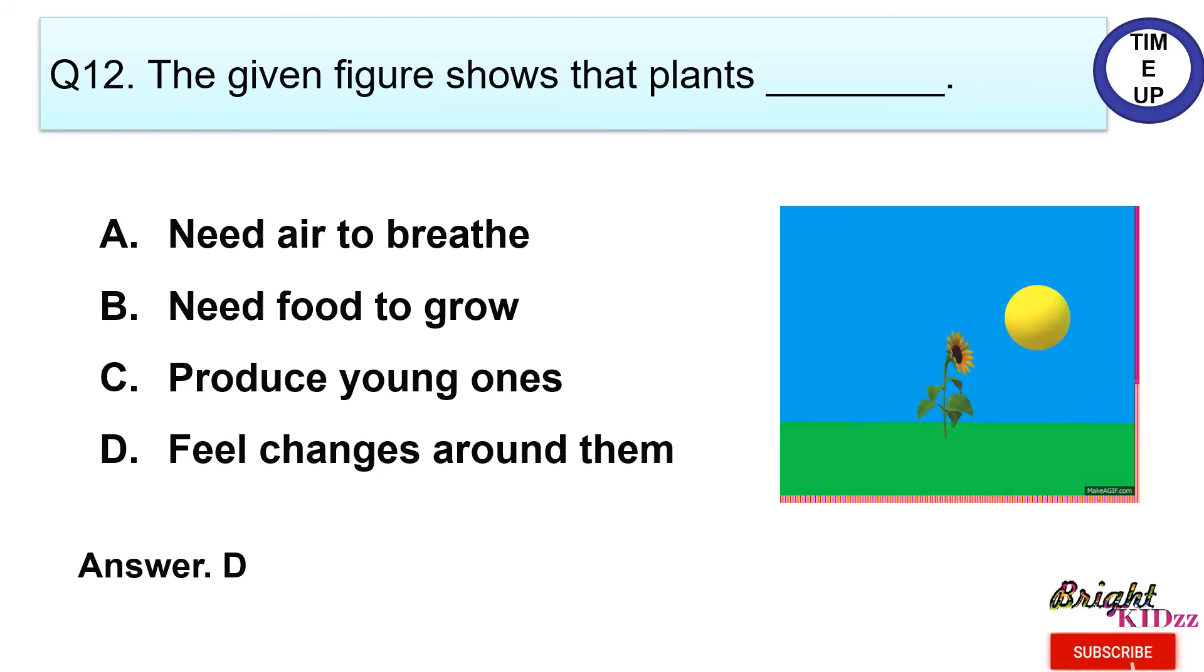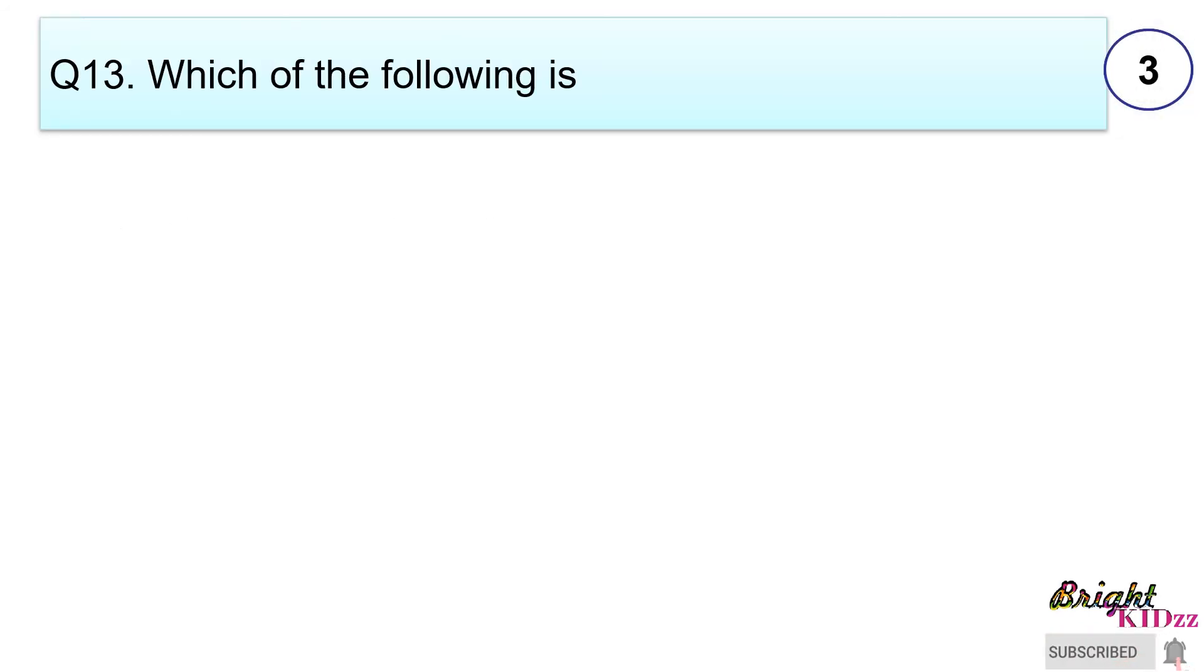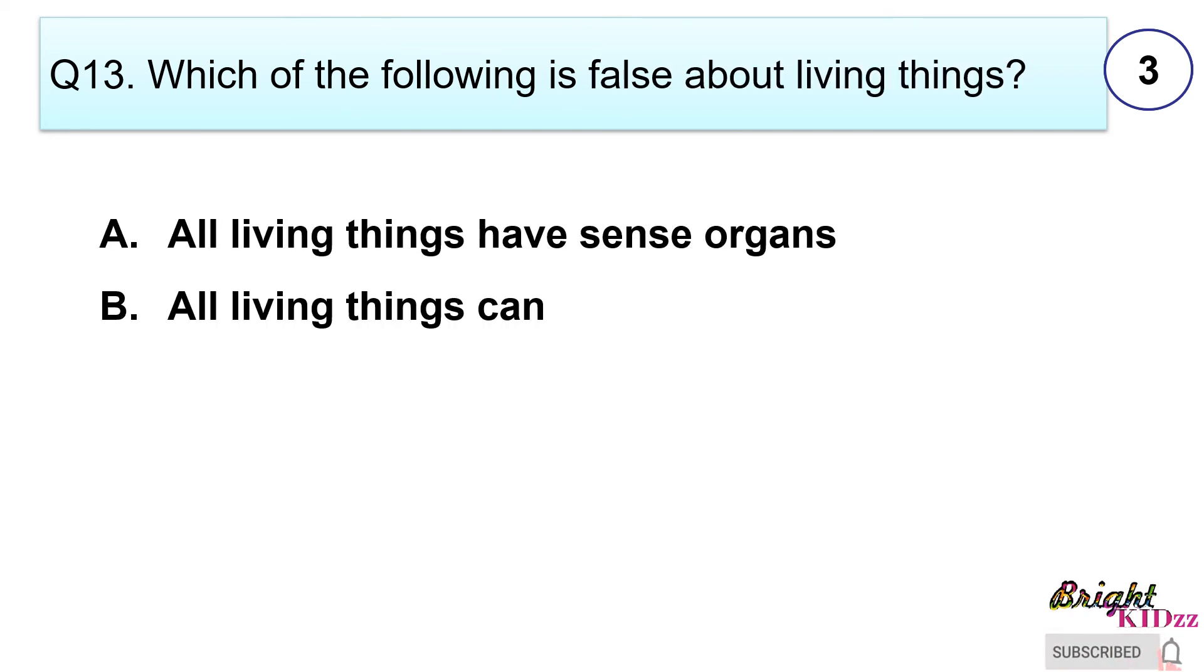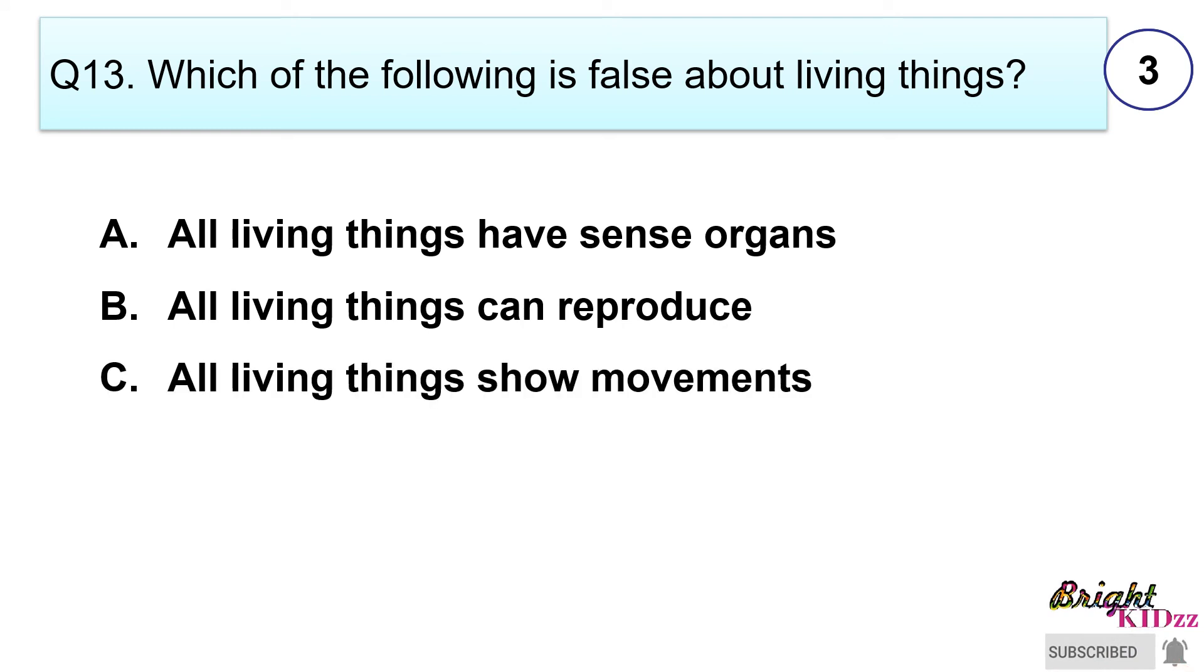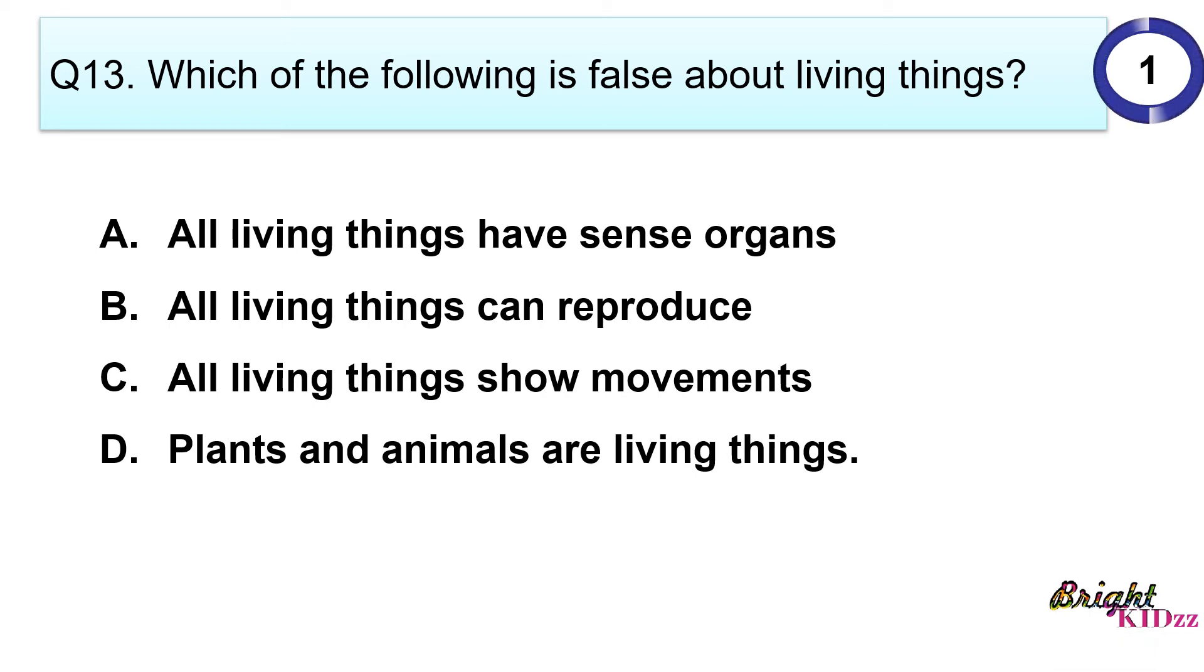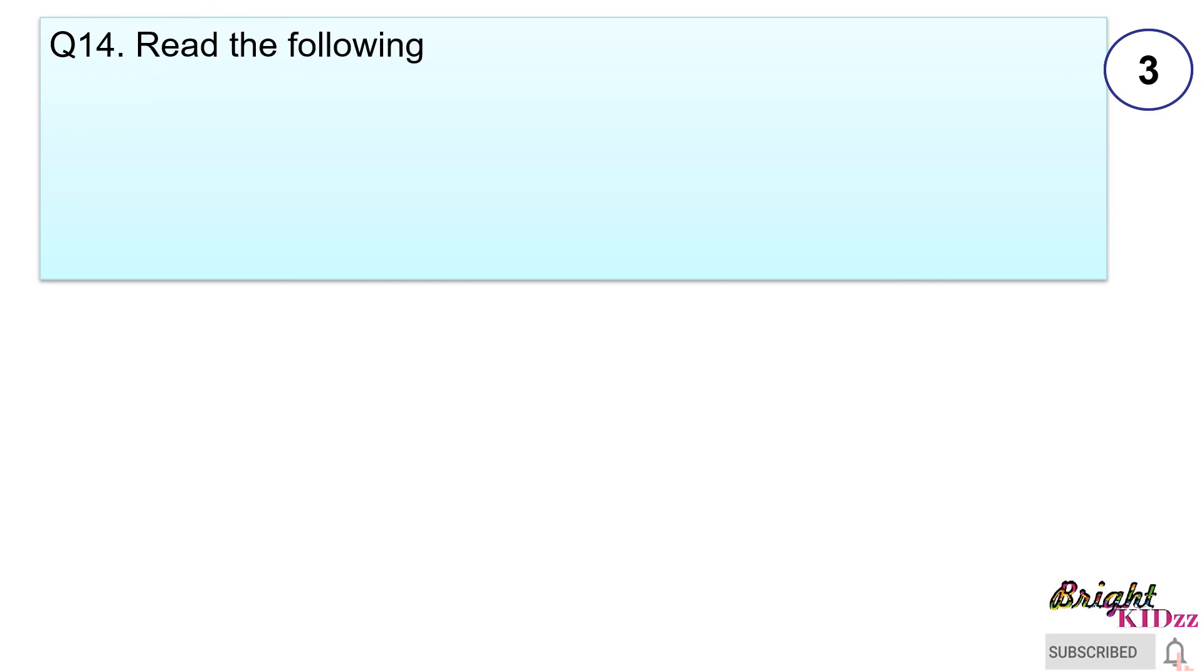Which of the following is false about living things? A. All living things have sense organs. B. All living things can reproduce. C. All living things show movements. D. Plants and animals are living things. Answer A. All living things have sense organs is false because plants do not have sense organs but they do feel the changes around them.